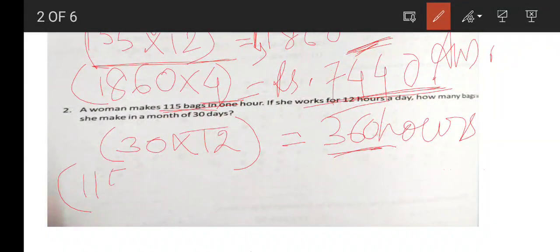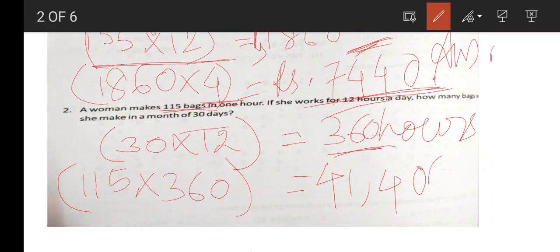So we multiply 115 with 360, which equals 41,400 bags.